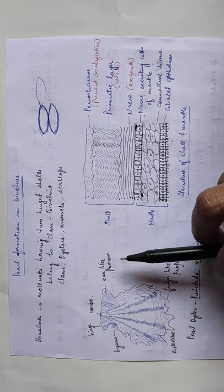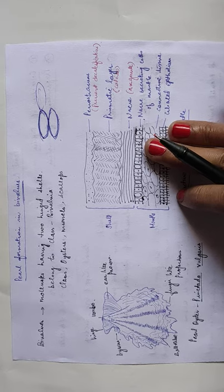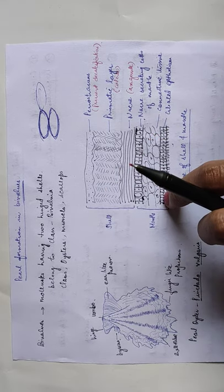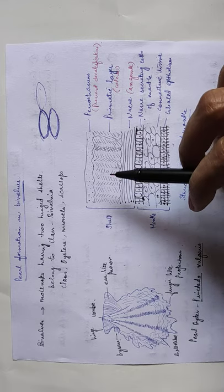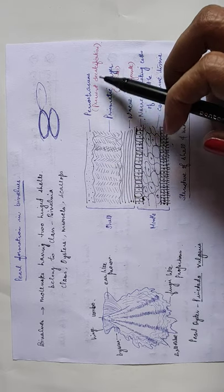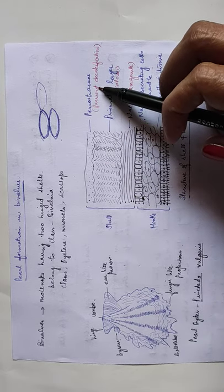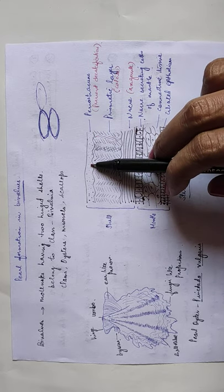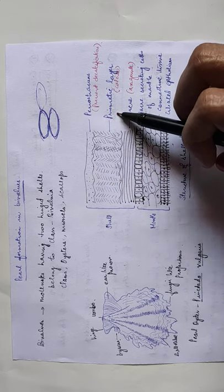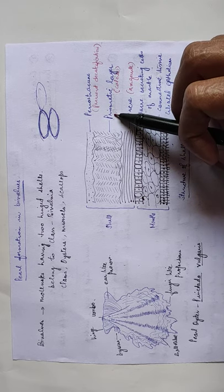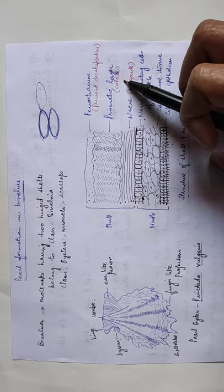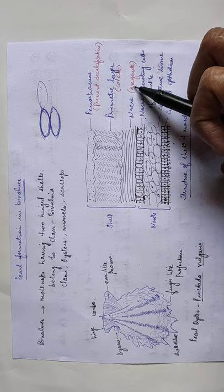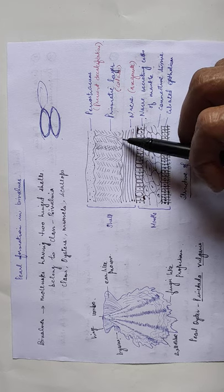If we study the section, it consists of two parts: shell and mantle. The outer layer of shell is periostracum layer. This prevents the decalcification of the shell. Next layer is prismatic layer, usually made up of calcite. Next is nacre layer, made up of aragonite. Both calcite and aragonite are forms of calcium carbonate.